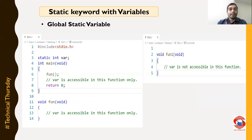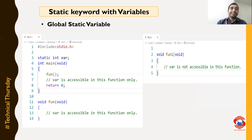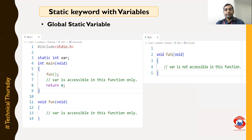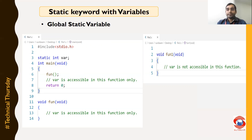Here, in this example, one variable which is a static variable is declared globally. So that variable is accessible in file1.c and in all the functions of file1.c, but it is not accessible in any of the functions of file2.c.